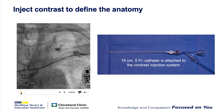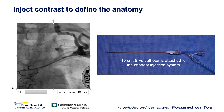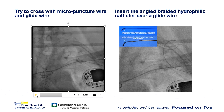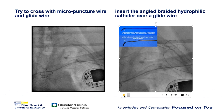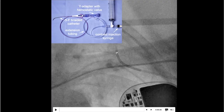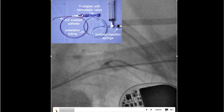The next step is to define the anatomy by injecting contrast, which shows you the area available to cross the occlusion. Wires alone frequently have difficulty crossing occlusions — here we try first a micropuncture wire and then a glide wire and couldn't get across. So we get out our 5 French angled hydrophilic catheter and place it over a glide wire that's been placed up into the collaterals. Once the angled catheter is in, we attach it to the contrast injection system with a rotating hemostatic valve.